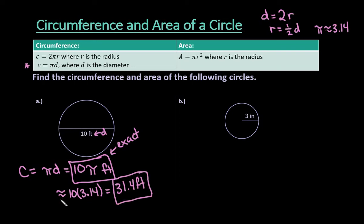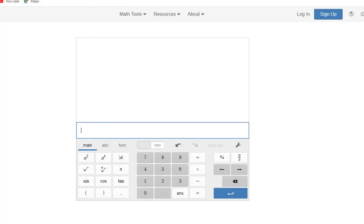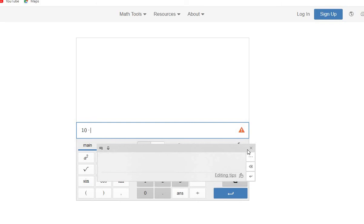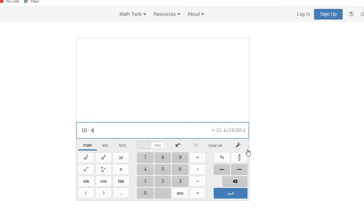or you can plug into your calculator 10 times pi. So I can hit the pi button on my calculator. So for this one, I'm just going to use Desmos.com to show you how to do this. So I would just do 10 times, and I would hit the pi button.